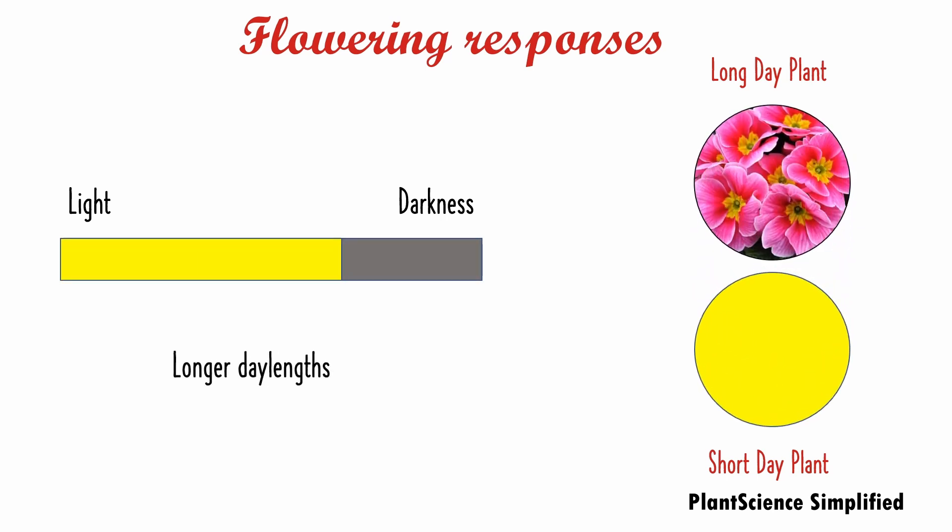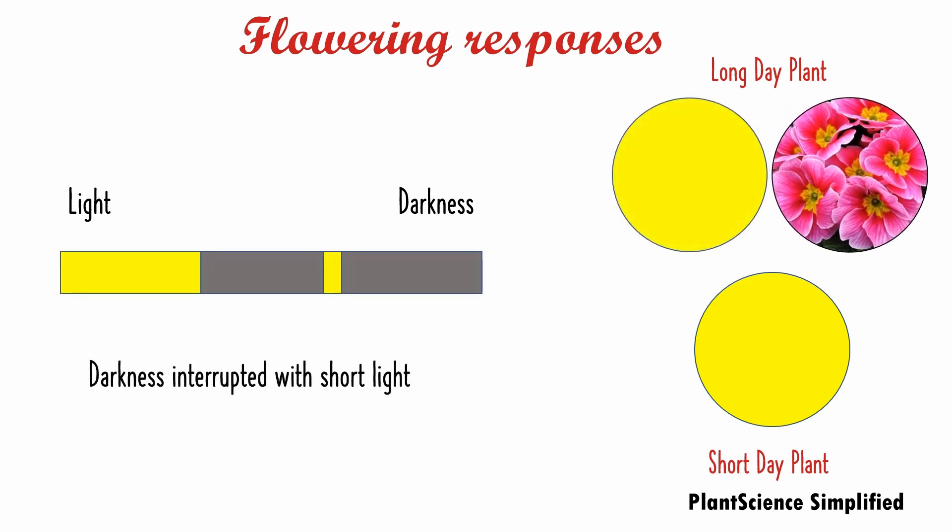When we provide longer day lengths, flowering will be initiated in long day plants but no flowering will be initiated in short day plants. In the short day scenario, if the darkness is interrupted with short light periods, it shows varied responses: there will be no flowering in short day plants, and while some long day plants won't show flowering, only some long day plants can show flowering or accelerated flowering.